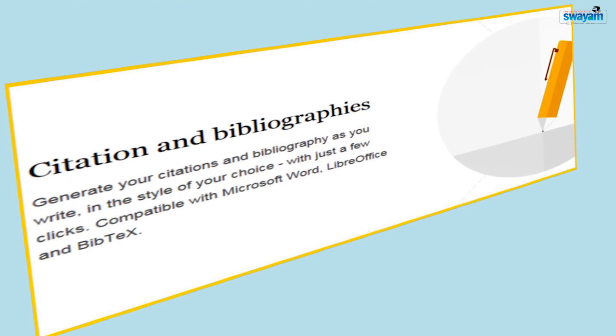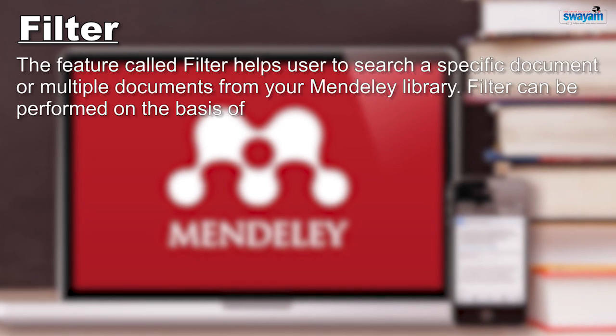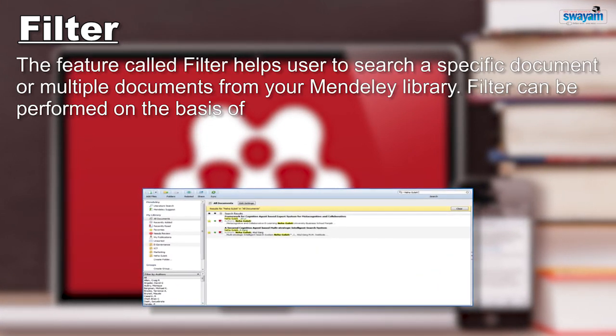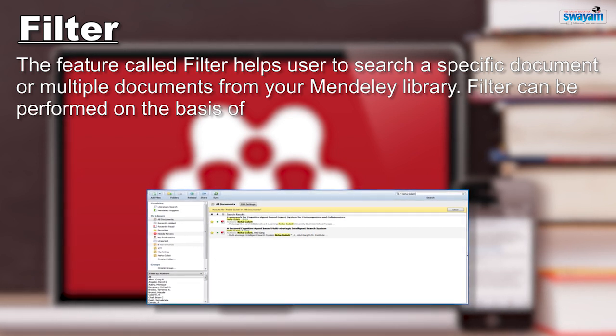Now you have folders and a lot of documents, and you know how to cite and reference. However, in a personalized library with several documents, manually searching for a particular document can be a problem. In a folder with hundreds of documents, it becomes very difficult to look for a specific one. The feature called Filter helps you search for specific documents from your Mendeley library.